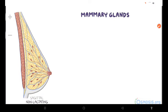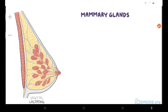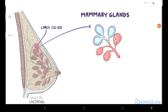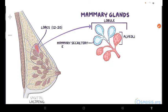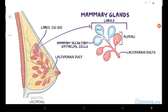Breasts contain the mammary glands responsible for lactation in females. Mammary glands are made up of 12 to 20 lobes, each of them containing many smaller lobules. These smaller lobules have grape-like clusters of alveoli that contain mammary secretory epithelial cells, the milk-producing cells of lactation. These alveoli, lobules, and lobes are connected through a network of ducts called the lactiferous ducts, and eventually form unique lactiferous ducts for each lobe, which opens independently to the areola to drain the milk produced during lactation.